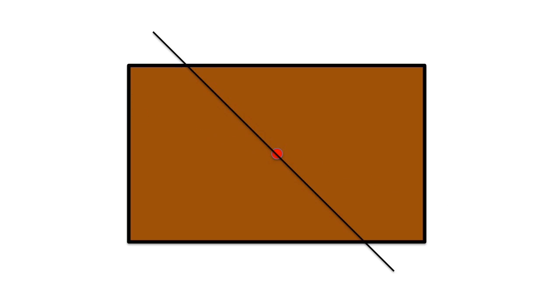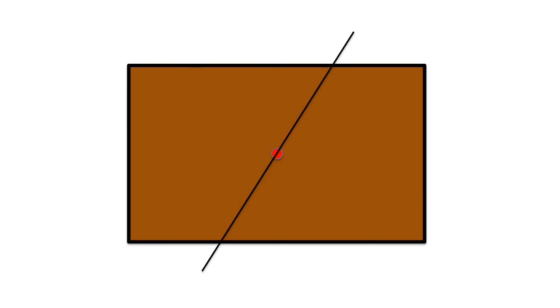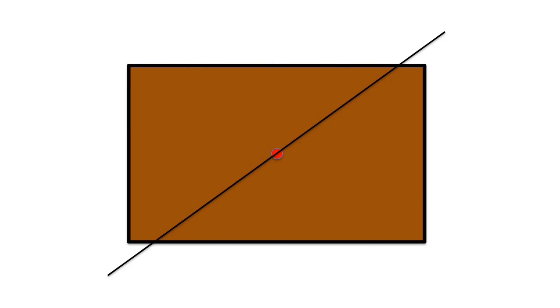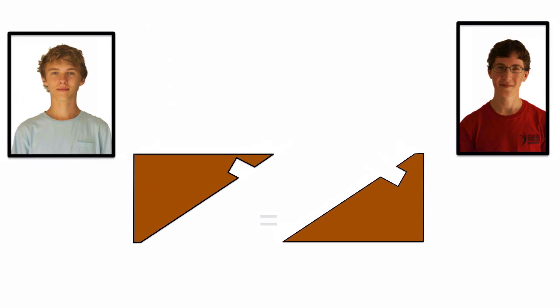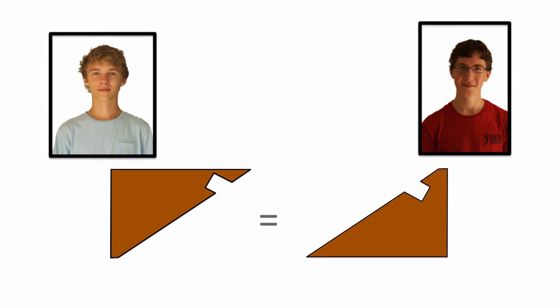Without the hole, any cut through the center of the rectangle would work. The key now is to cut through the center of the brownies and the center of the hole. The brownies and the hole are both equally divided, so David and Lucas get the same amount of brownies.